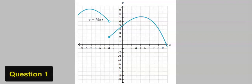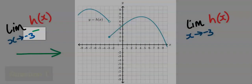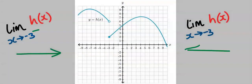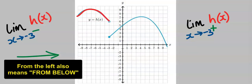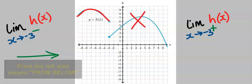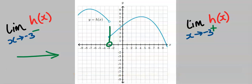Let's consider this question. We are going to approach this graph from the left, which is minus, and also from the right, which is plus. Approaching from the left, we consider the limit of h(x) as x tends to minus 3. We trace from minus 3 up towards the curve and here we got a hole. Tracing the hole to the y-axis, the approach from the left is 6.